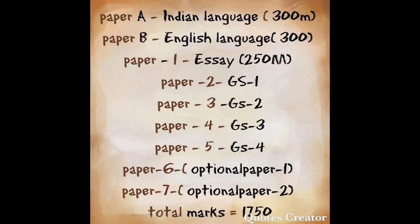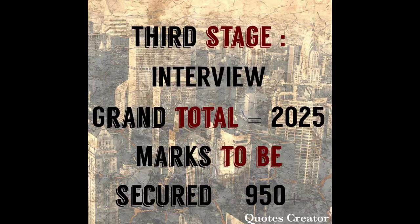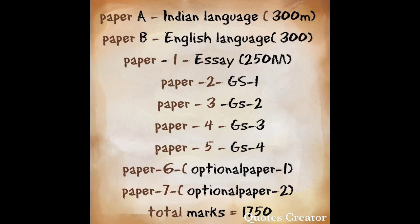The Mains Examination is a written examination. It consists of 9 papers, out of which 2 papers are only qualifying. The marks obtained in the remaining 7 papers and the interview together are considered for the final merit. Paper A is the compulsory Indian language paper for 300 marks with a 3-hour duration. Paper B is the English language paper for 300 marks with a 3-hour duration. Paper A and Paper B are both qualifying papers.